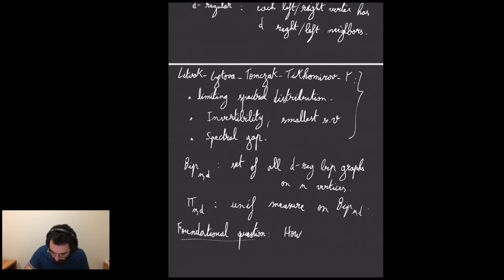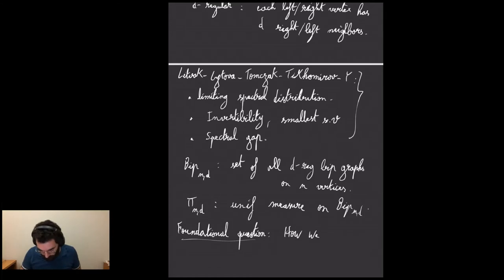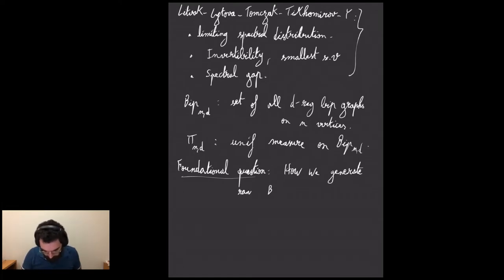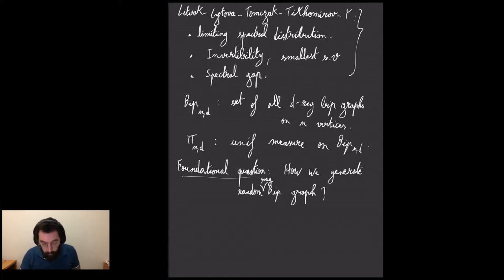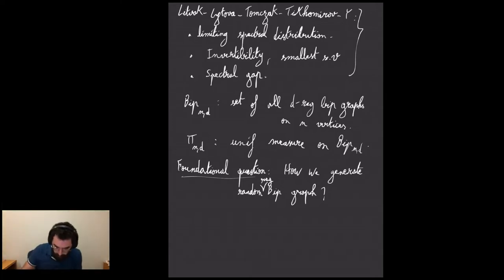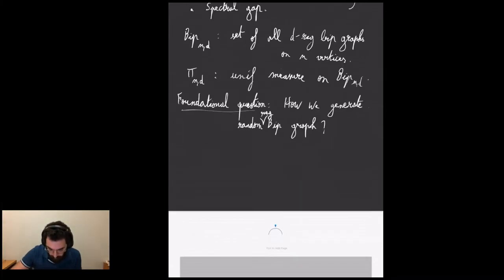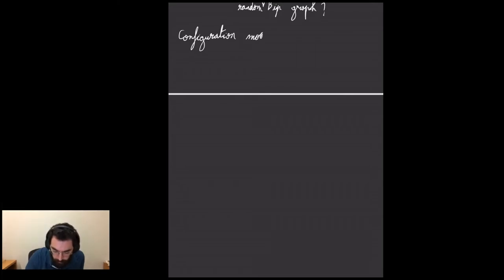The question we're going to ask is really basic: how do we generate this measure? How do we generate a random — meaning uniformly distributed — bipartite graph? One way to do this is to use what we call the configuration model.